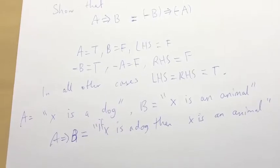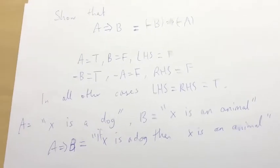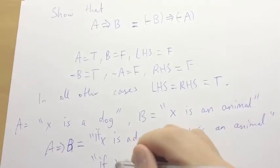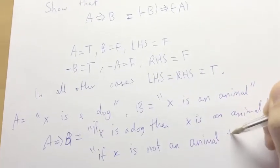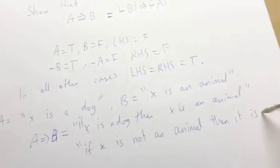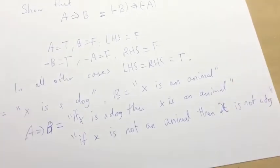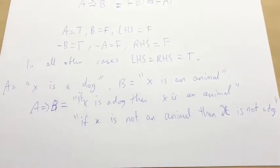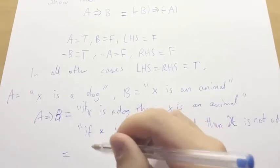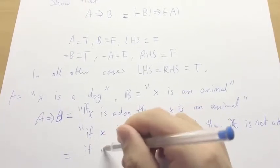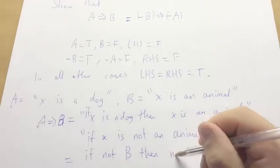So if X is a dog, it must have been an animal. It must be an animal. So if it's not an animal, then it couldn't be a dog. So if X is not an animal, then it is not a dog. So that's another way of saying, if not B, then not A.